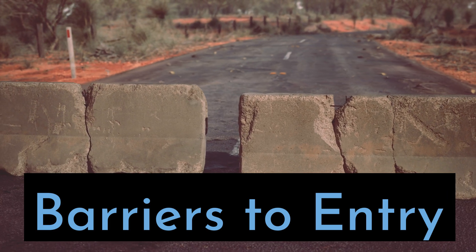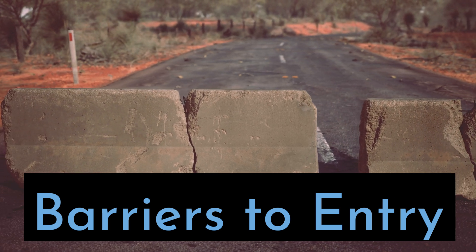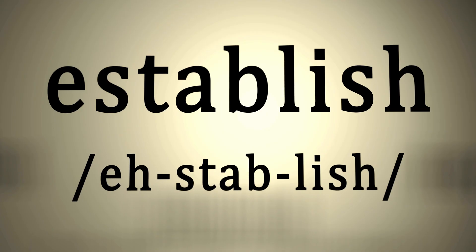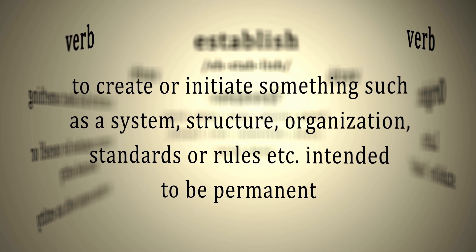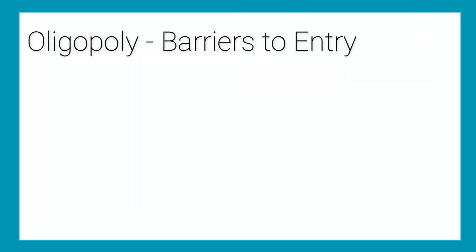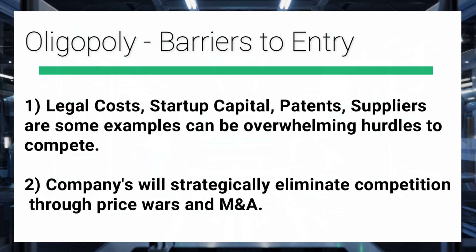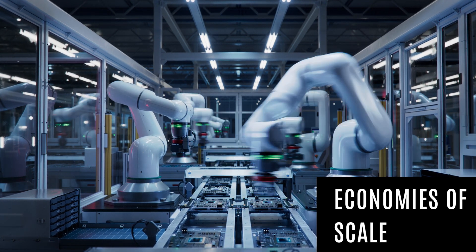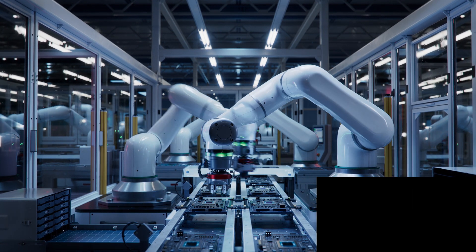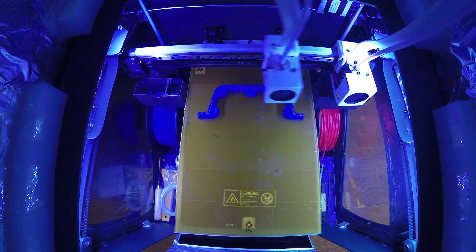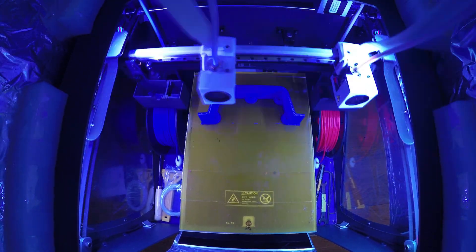Let's talk barriers to entry, because this is very different from the other two categories. New companies will have a challenging time establishing themselves in an oligopoly market. Legal costs, patents, startup capital, supplies, and raw materials can be overwhelming hurdles when you have three to five established competitors in the marketplace. In addition, companies will strategize against newcomers — they can undercut competition with price wars, or make you an offer you can't refuse through M&A mergers and acquisitions. Established oligopoly players can also develop operational efficiencies and economies of scale that give them a strategic advantage and make it almost impossible for a new company to establish themselves.